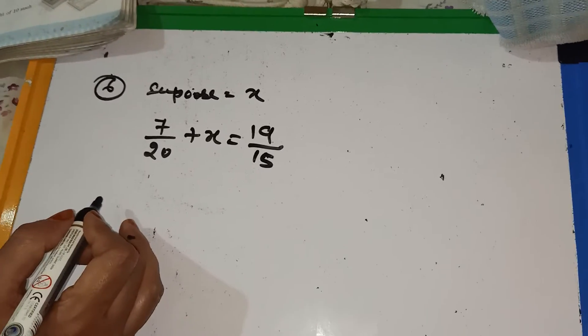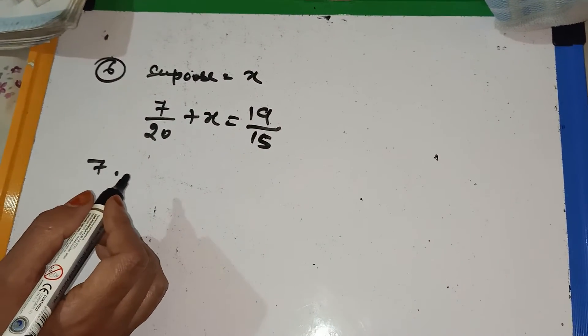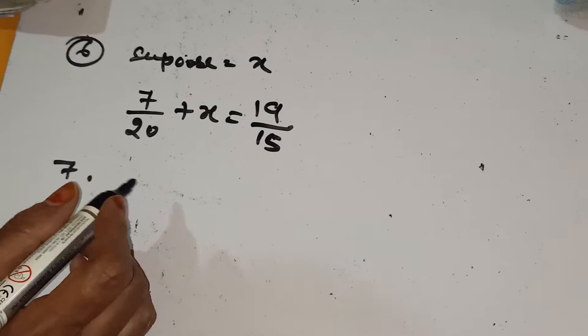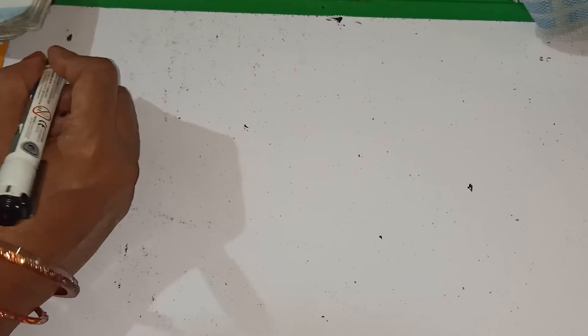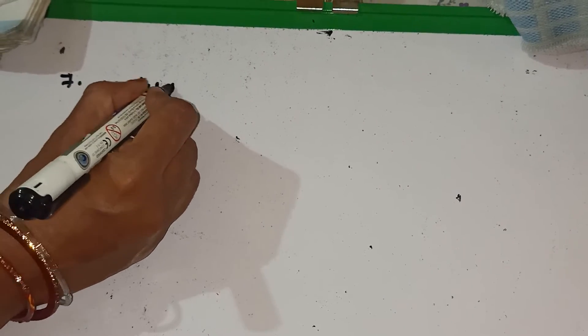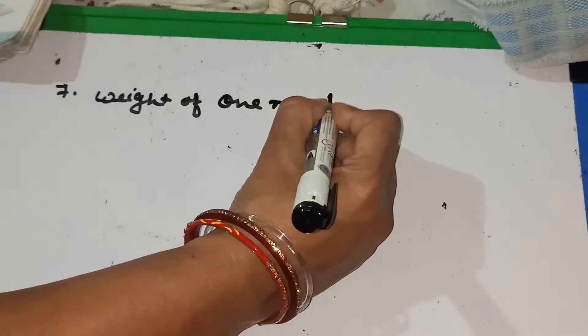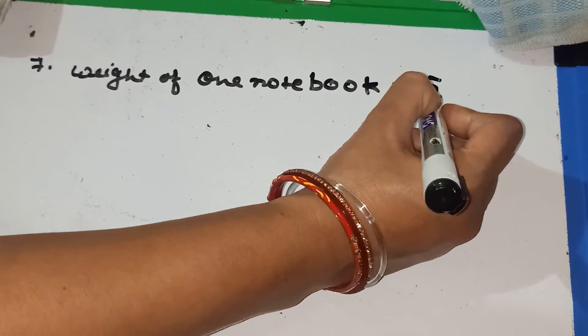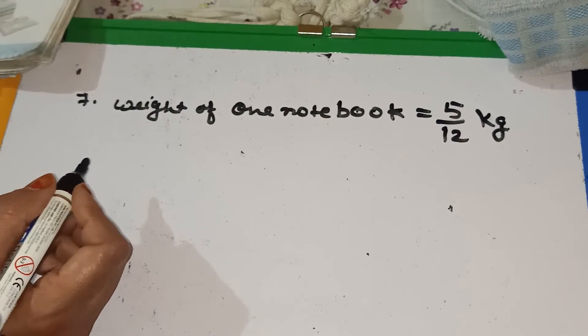Now question number 7. A notebook weight is 5 by 12 kg. How can we write the weight of such as the 10 notebooks? So how can we write? First we write like this. Question number 7. Weight of 1 notebook is equal to 5 by 12 kg.